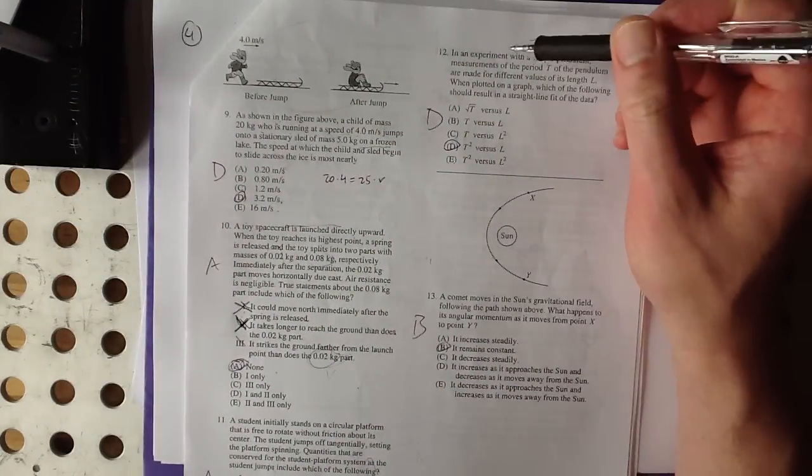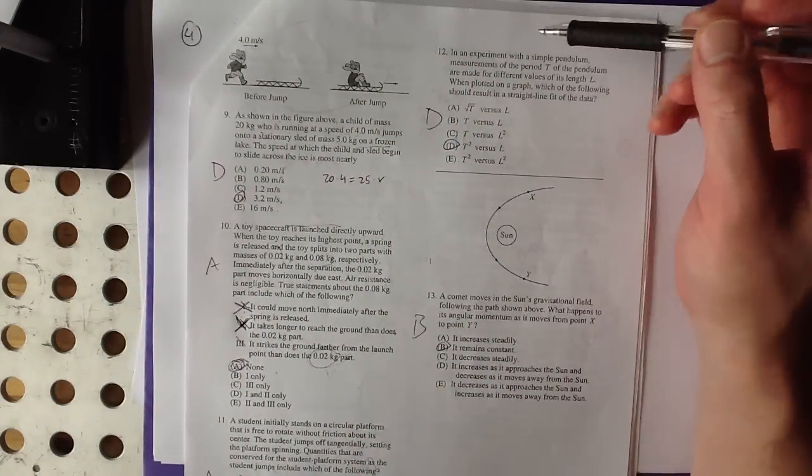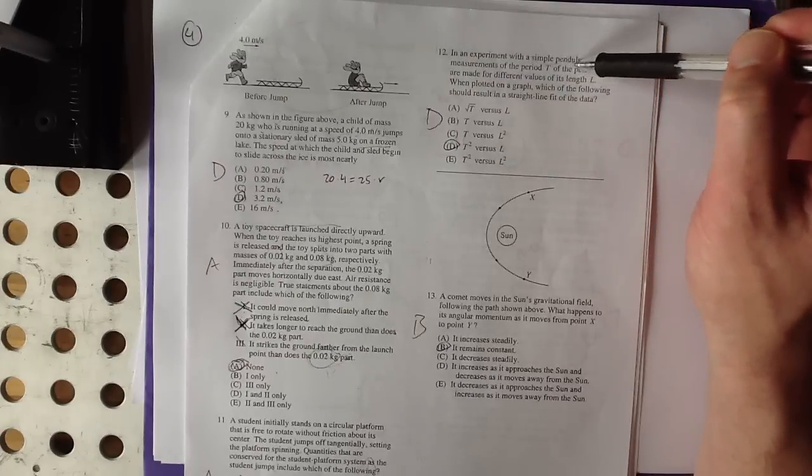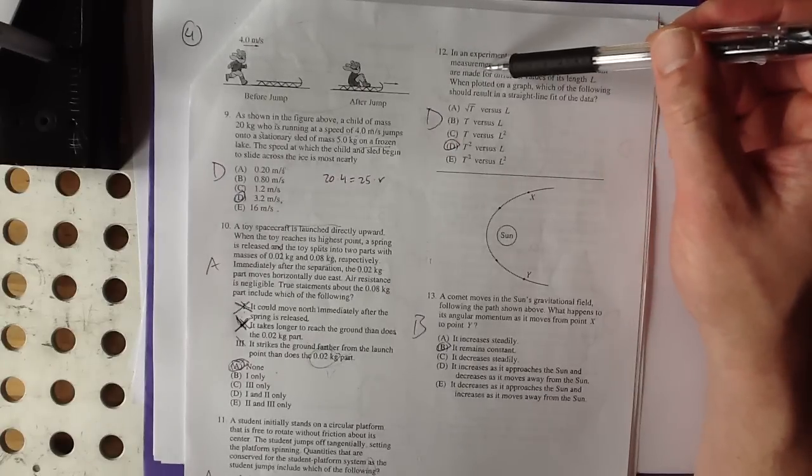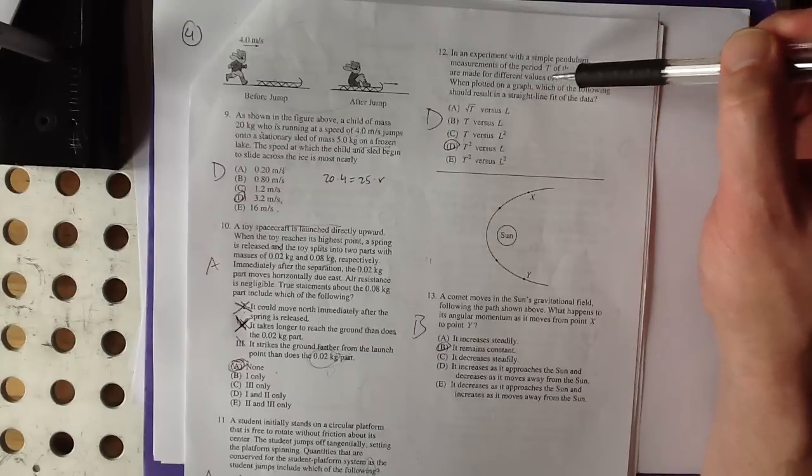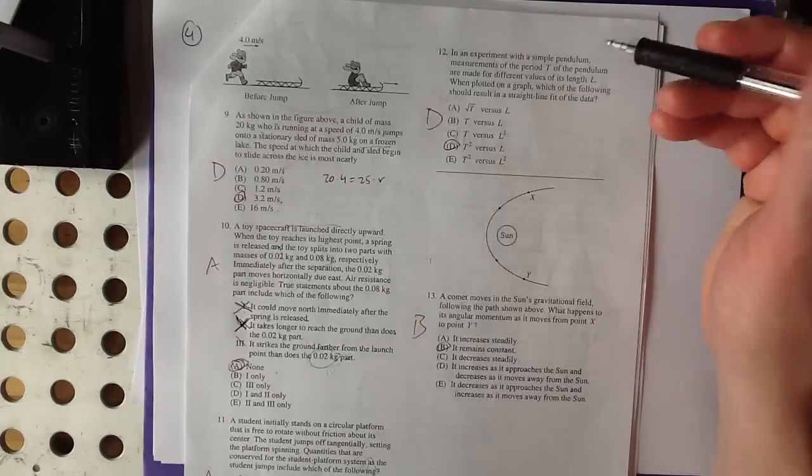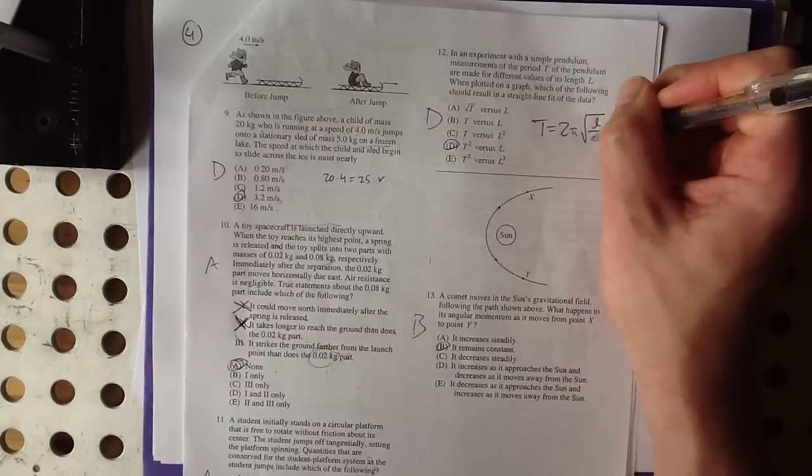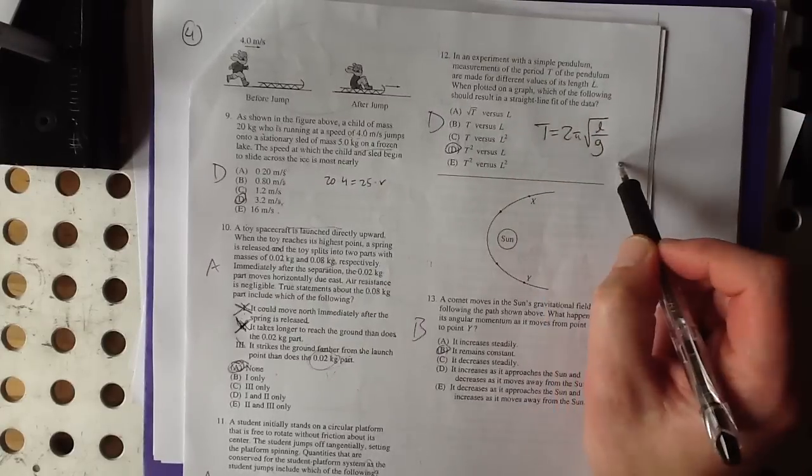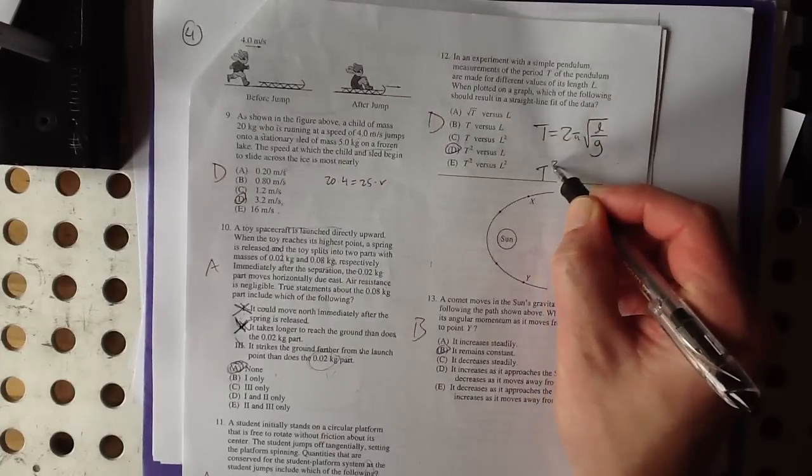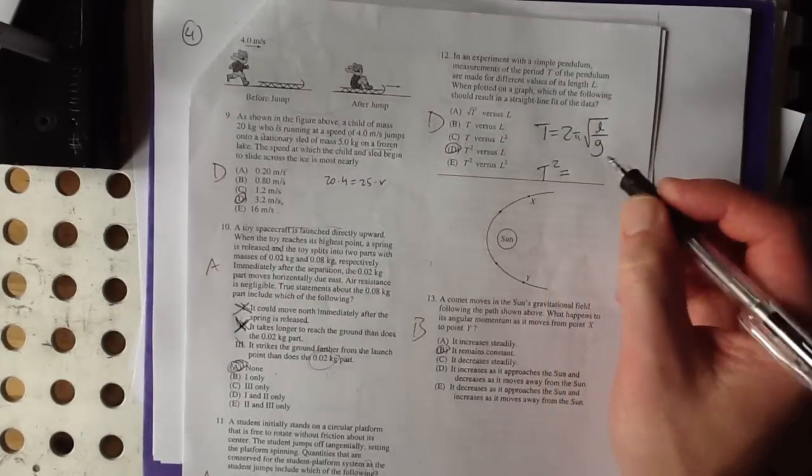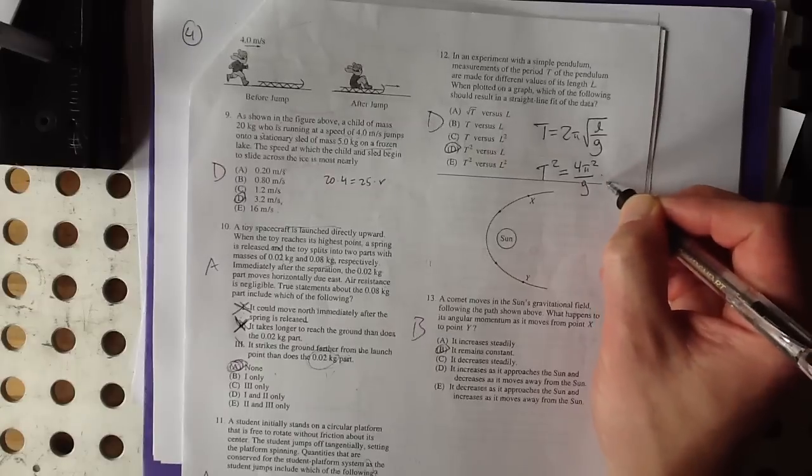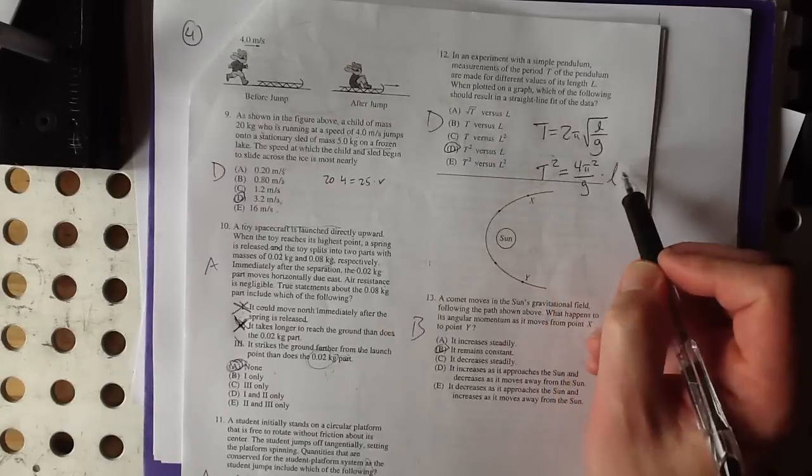Number 12. Oh, this is right up our alley. We've been talking about this recently in class. In an experiment with a simple pendulum, measurements of the period T of the pendulum are made for different values of L. When plotted on a graph, which of the following should result in a straight line fit? Well, T equals 2π times the square root of L over g. So if you want to linearize this, we would do... like if this were a free response question and they wanted us to graph and find an experimental value of g, then there's our experimental values.